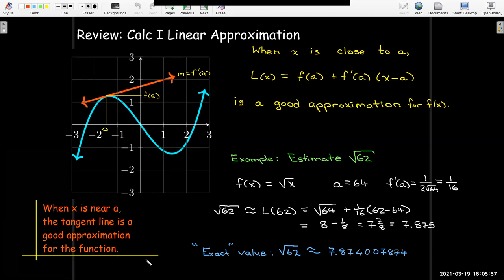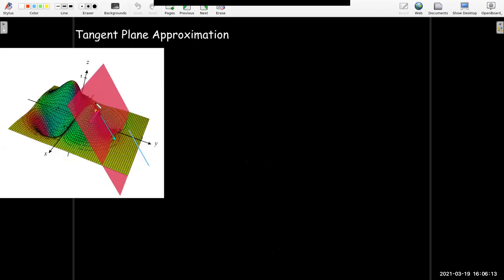We could say something very similar about a two-dimensional linear approximation. The equation of the tangent plane at a specific point should be a good approximation. If you're close to that point P, it should be a good approximation for the surface.